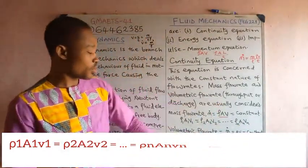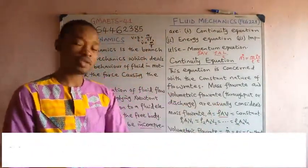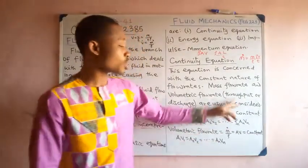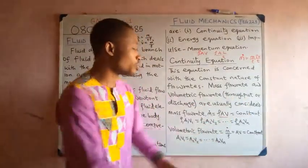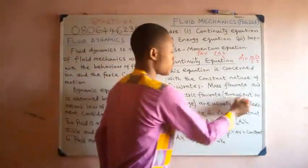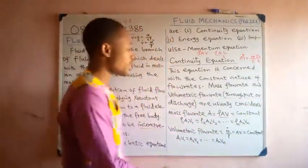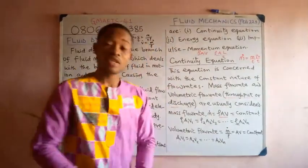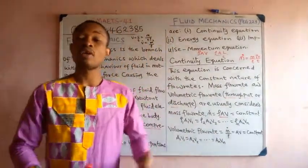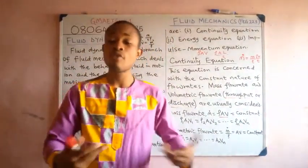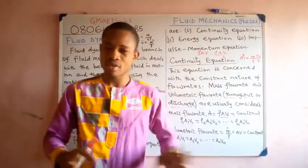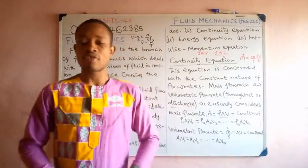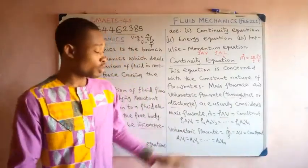We are done with mass flow rate. Volumetric flow rate is also called throughput — or discharge, or in some cases liquid overflow. These are terms used to refer to volumetric flow rate.